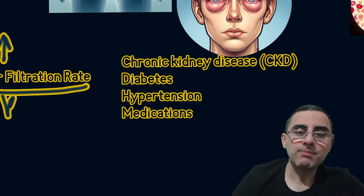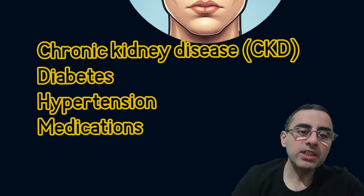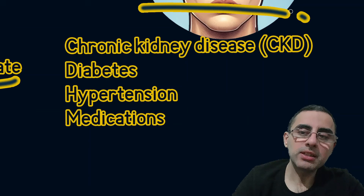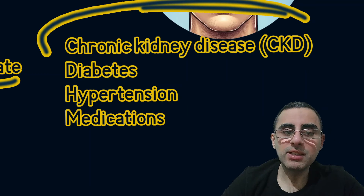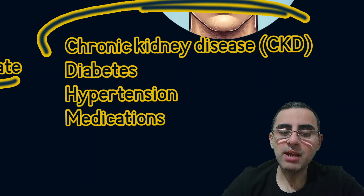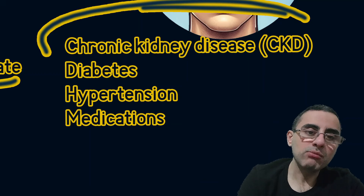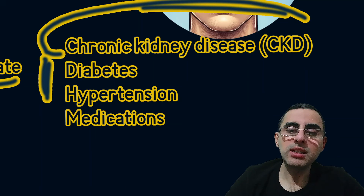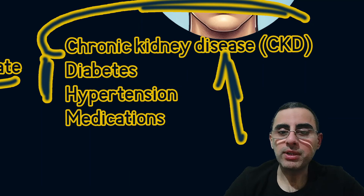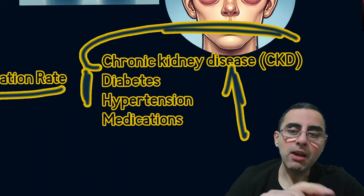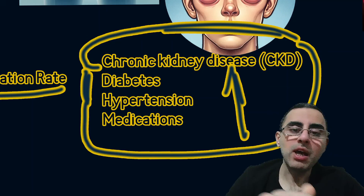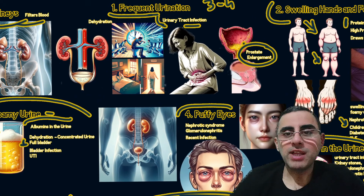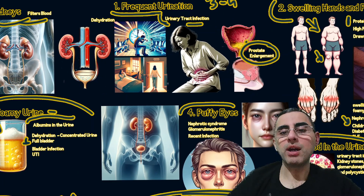The most common causes of increased creatinine levels are chronic kidney disease, diabetes, and hypertension, with medications also playing a role. Chronic kidney disease, most often caused by diabetes and hypertension, leads to gradual deterioration of kidney function. Our aim and goal is to slow down this degradation process. Thank you for watching — if you like the video, please thumbs up, and if you like the channel, please subscribe.